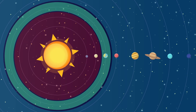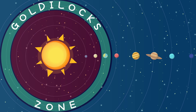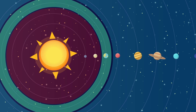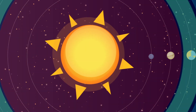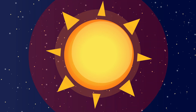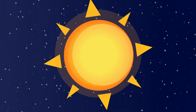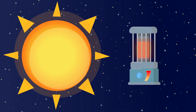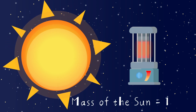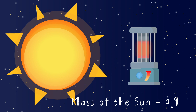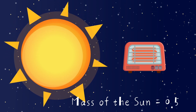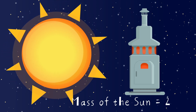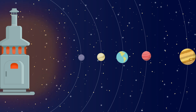Another name for the habitable zone is the Goldilocks zone. However, the habitable zone of a solar system doesn't always lie at one AU. The distance of a habitable zone from its central star depends on the mass of the central star. To better understand this concept, let's think of the Sun as a stove. A central star with a mass of 1 can be thought of as a normal stove, while a central star with a mass of less than 1 can be considered a small stove, and a central star with a mass of greater than 1 can be thought of as a large stove.